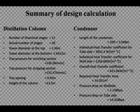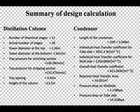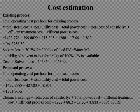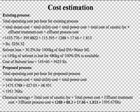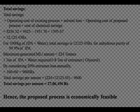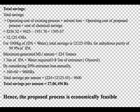Summary of design calculations — Distillation column: The height of the distillation column was calculated as 13.5 m and the area required for heat transfer for the condenser was calculated as 14.05 m². Cost estimation: The total operating cost per hour for the existing process was 3,256 rupees, and for the proposed process it was 1,951 rupees. The total savings for a feed of 1,000 kg was found to be 12,125 rupees, and the total savings per annum was calculated as 2,76,496 rupees.